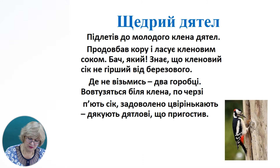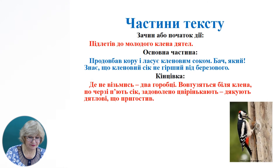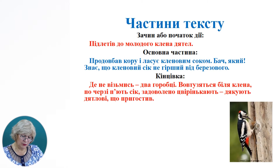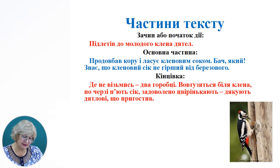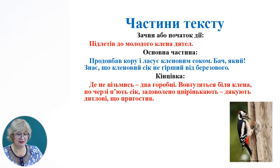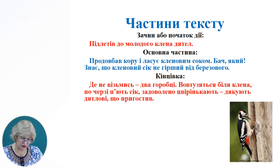Тепер розберемо поданий текст. Знайдемо зачин або початок дії: «Підлетів до молодого клена дятел». Далі йде основна частина: «Продовбав кору і лакує клиновим соком. Бач, який знає, що клиновий сік не гірший від березового». І кінцівка поданого тексту: «Де не візьмись два горобці. Поворушились біля клена. По черзі п'ють сік. Задоволено цвірінкають. Дякують дятлові, що пригостив».